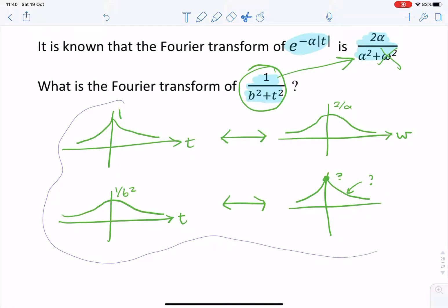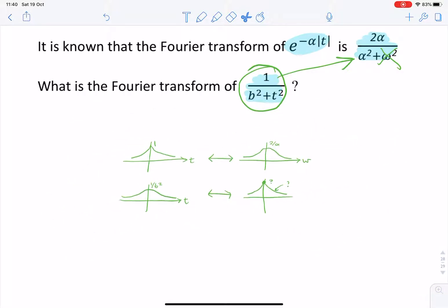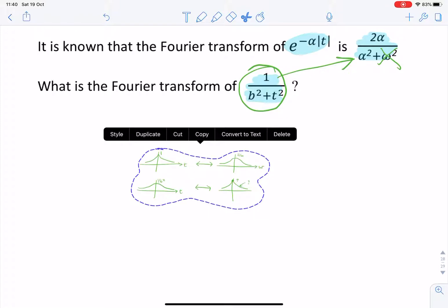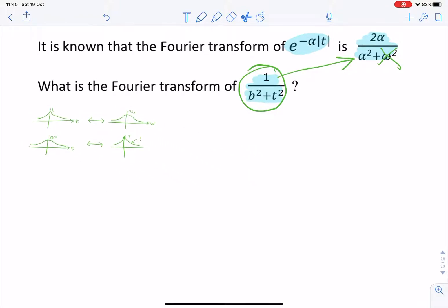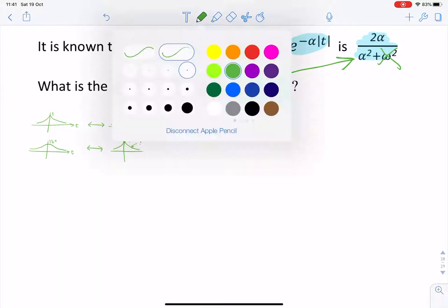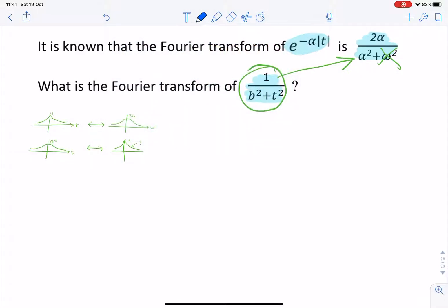So we'll be using the duality property of the Fourier transform. Let's get this out of the way. Using the duality property, let's just write that. Duality, that's the symmetry property.